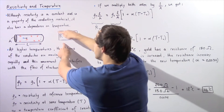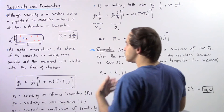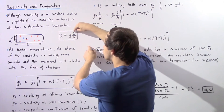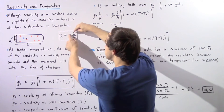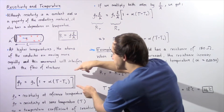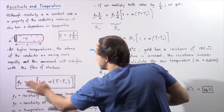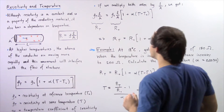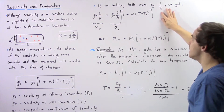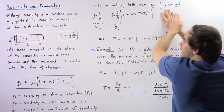Now, once again the resistance is equal to the product of our resistivity and the ratio L divided by A. So if we take this equation and multiply both the left and right sides by L divided by A, we get the following result.